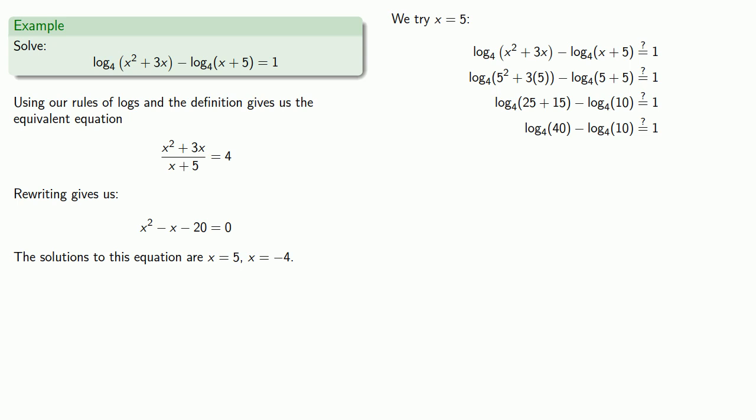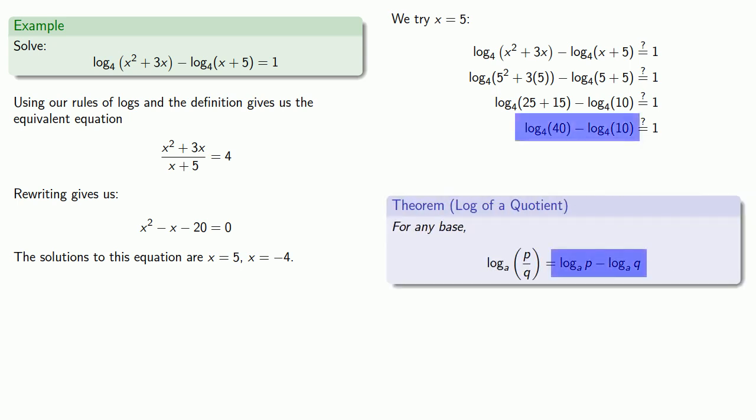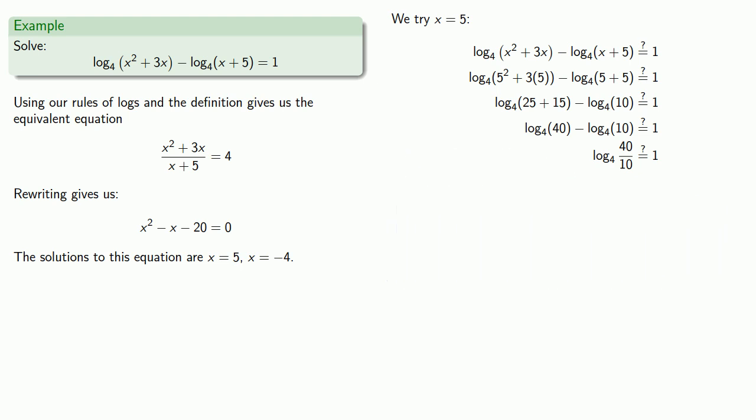But because both 40 and 10 are positive numbers, we know they have a log, so we can combine those logs. This is the difference of two logs, so we rewrite it as the log of the quotient 40 over 10. We can simplify this a little bit: 40 divided by 10 is 4.